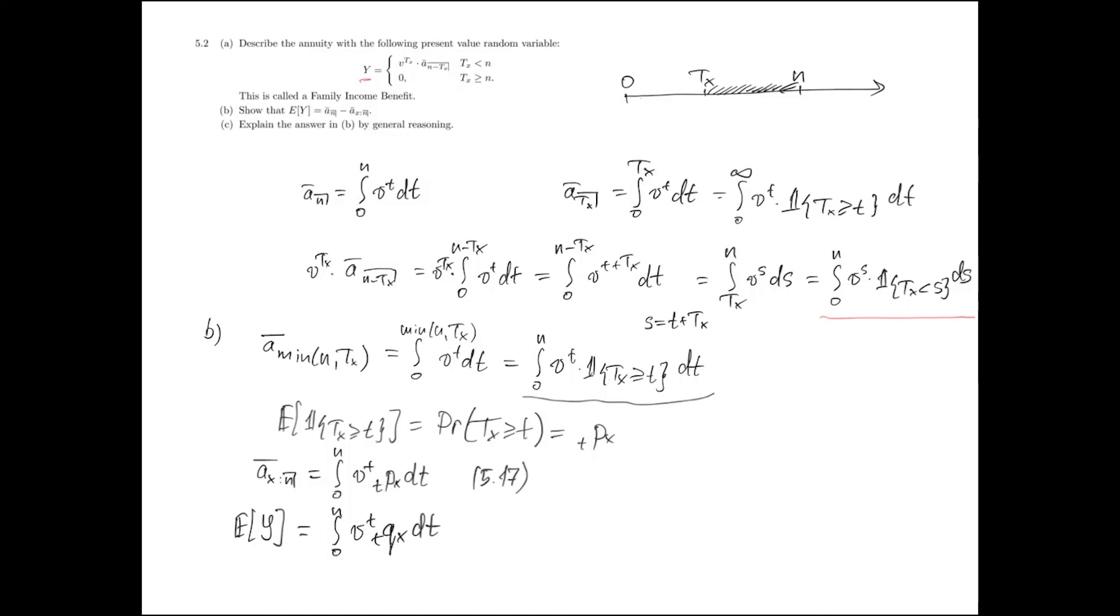If we rewrite this integral in terms of survival probabilities, then we obtain integral of v^t times 1 minus tpx dt.